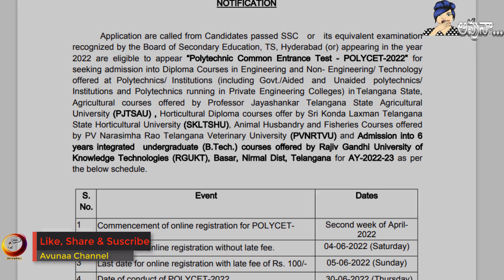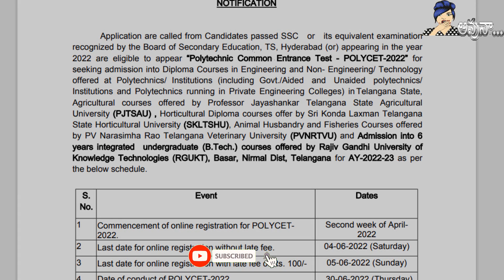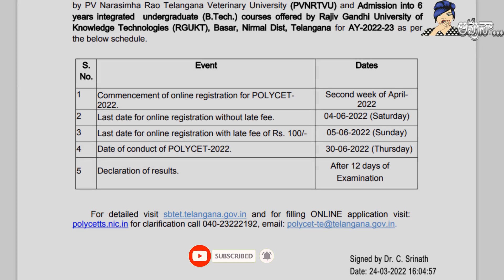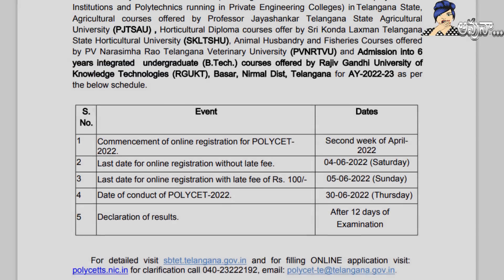TS Polycet generates two different ranks each year: one for Technical and Polytechnic Diploma, and another for Agriculture and Veterinary Diploma.